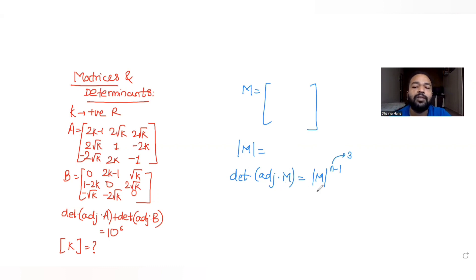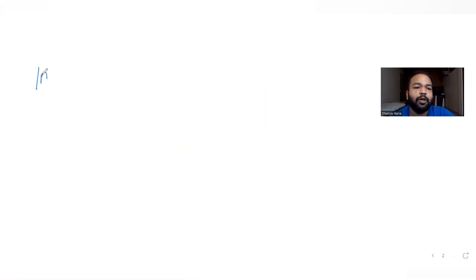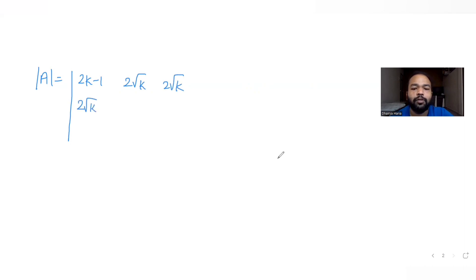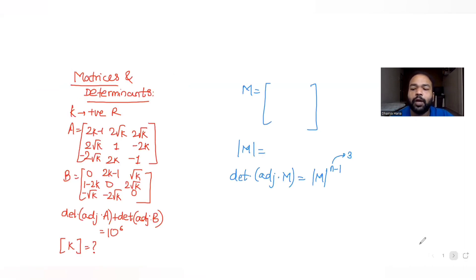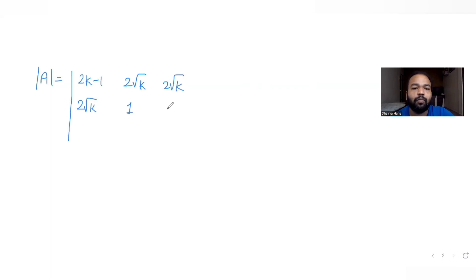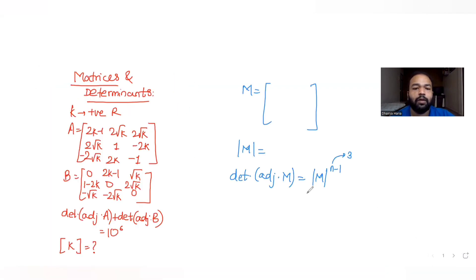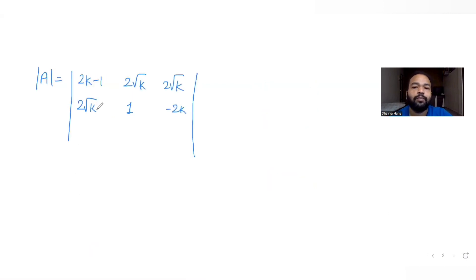To apply this idea, let's first calculate det(A) and det(B). Setting up the determinant of A: it becomes the determinant of the 3×3 matrix with rows [k−1, 2√k, 2√k], [1, −2k, ...], and [−2√k, 2k, −1].